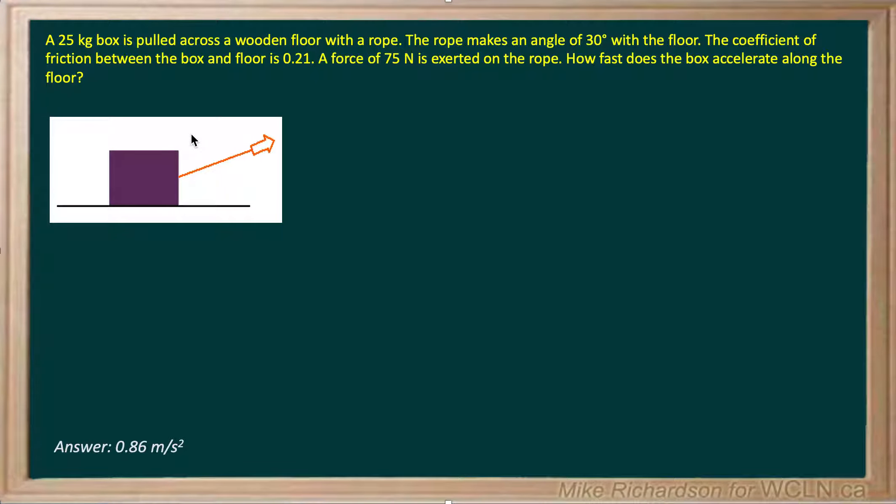All right, the first thing we want to do is identify all the forces that are acting on this 25 kilogram box as it's pulled across the floor. Now, they've already said there's a rope that pulls on the box with a force of 75 newtons, so we know that force. Acting on the box, as usual, is our force of gravity, which will be straight down.